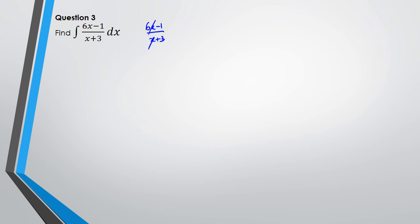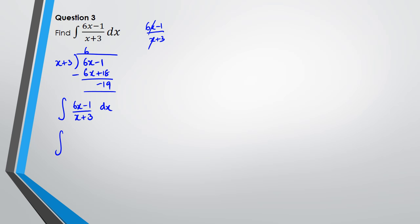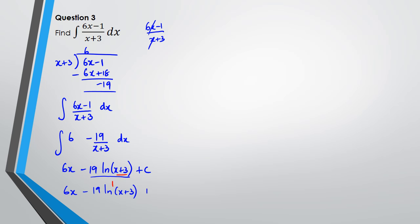So I can rewrite the integral of (6x − 1)/(x + 3) dx as the integral of (6 − 19/(x + 3)) dx. Integrating this gives 6x − 19 · ln(x + 3), divided by the differentiation of x + 3 which is 1. So the final answer is 6x − 19 ln(x + 3) + c.